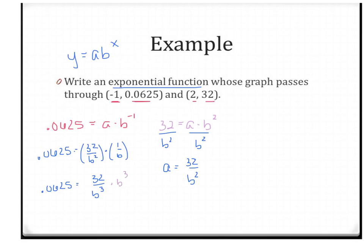Multiply each side by b³ to get 0.0625·b³ = 32, then divide by 0.0625 to get b³ = 512. Taking the cube root of both sides, we get b = 8.